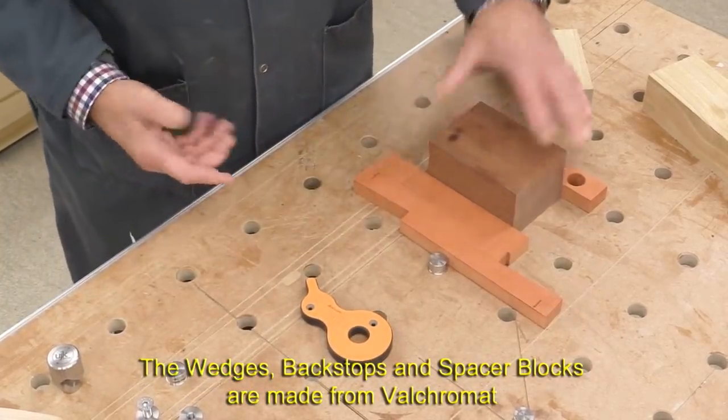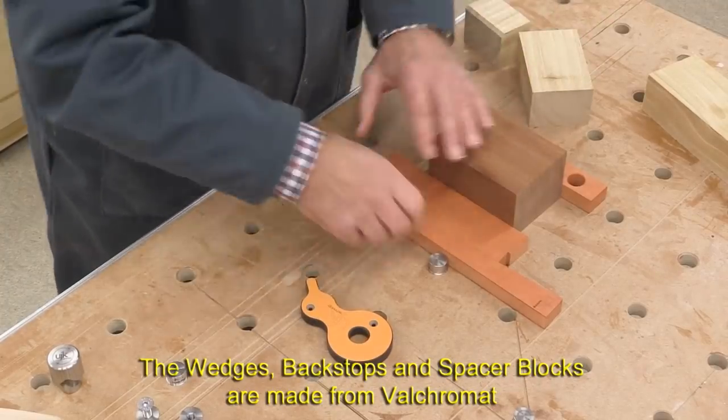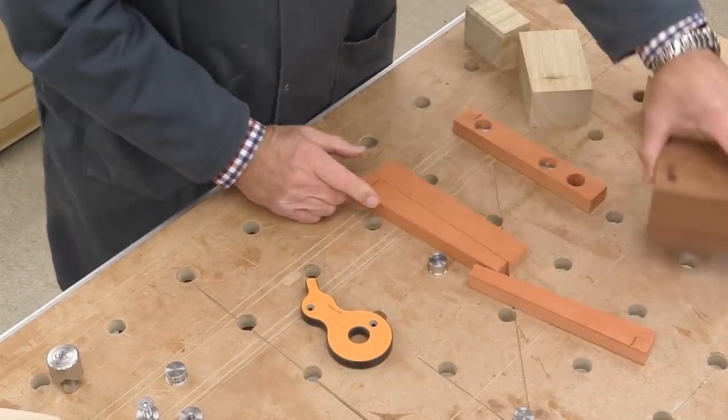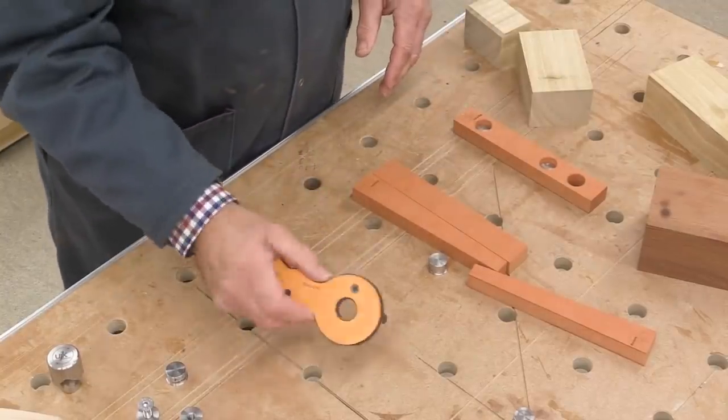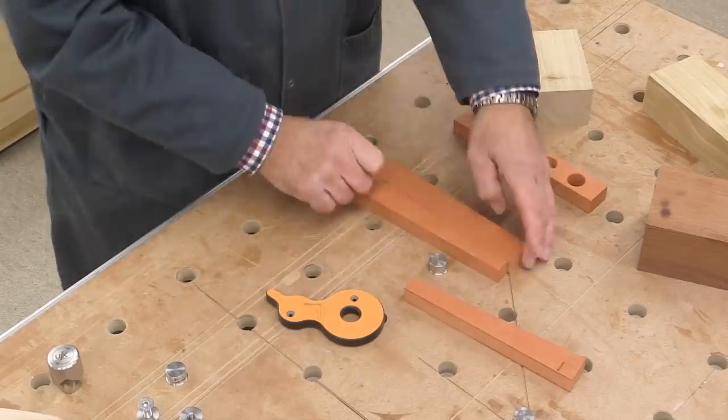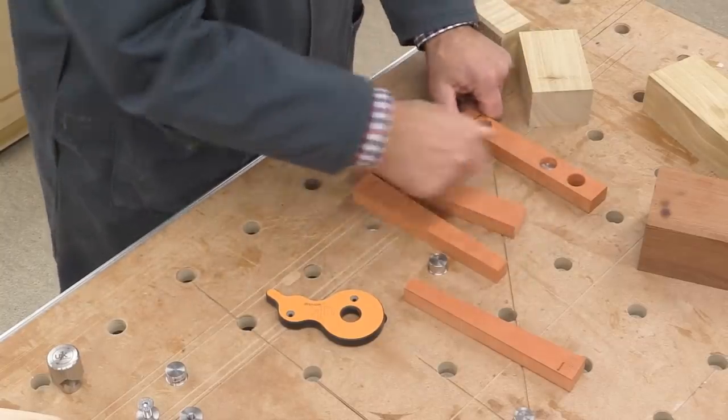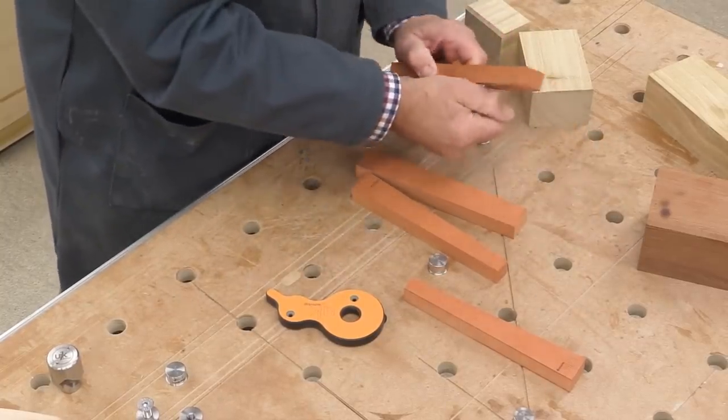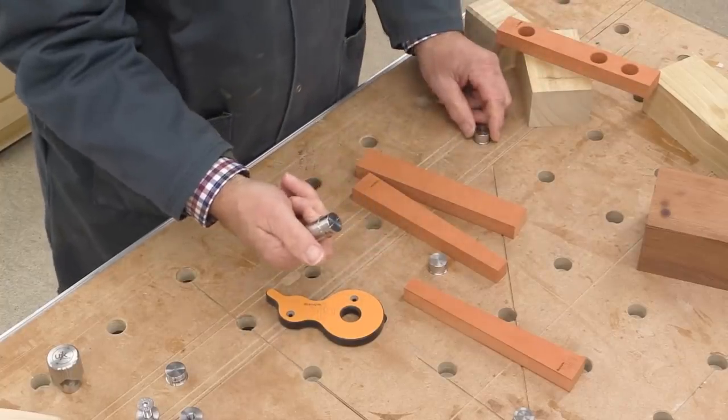So the list is endless. And this is all achieved by having either the cam clamp or combination of the cam clamp, wedges, a spacer, the backstop, and, of course, these guide pups.